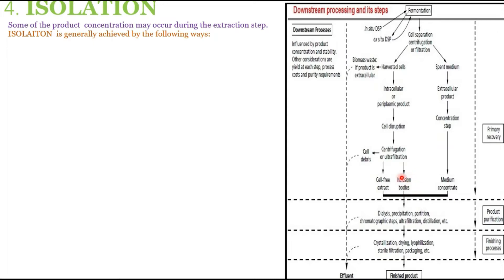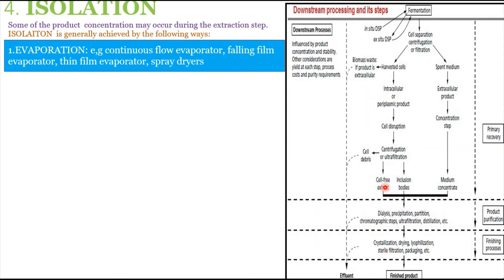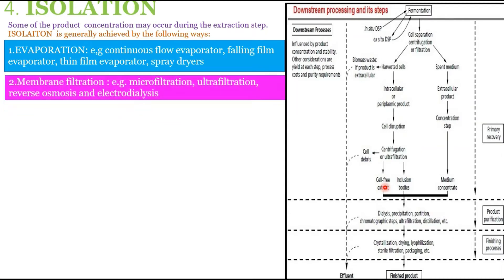Isolation is generally achieved by evaporation, using a continuous flow evaporator, falling film evaporator, thin film evaporator, or spray dryer to remove water and concentrate the product. The next method is membrane filtration, using microfiltration, ultrafiltration, or sometimes reverse osmosis and electrodialysis.